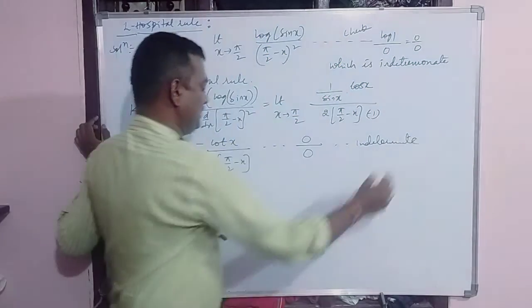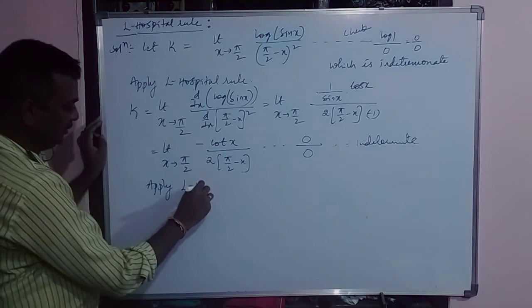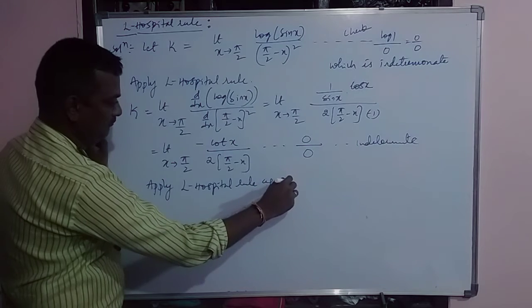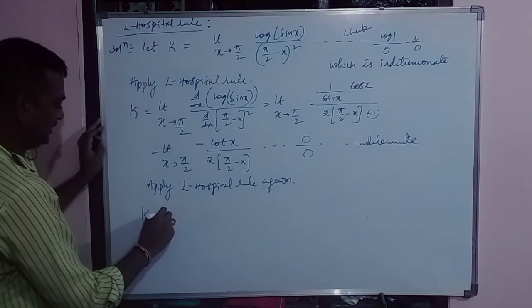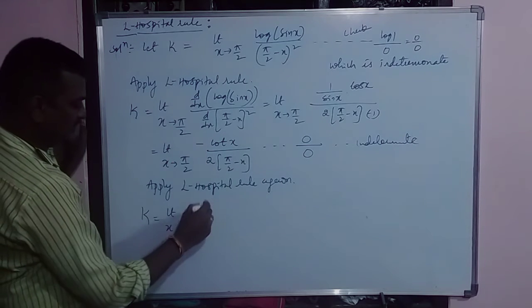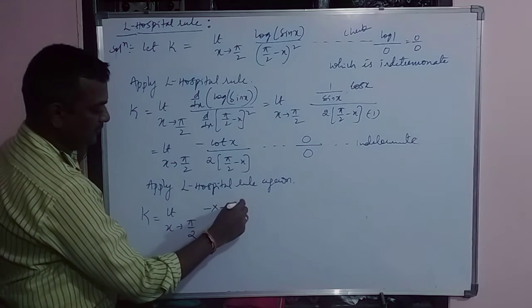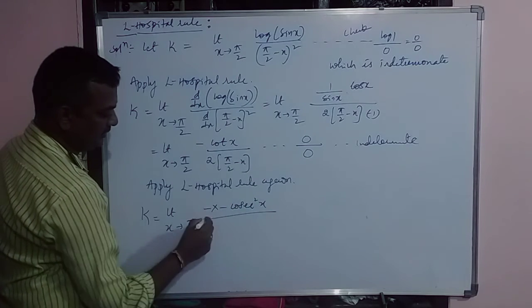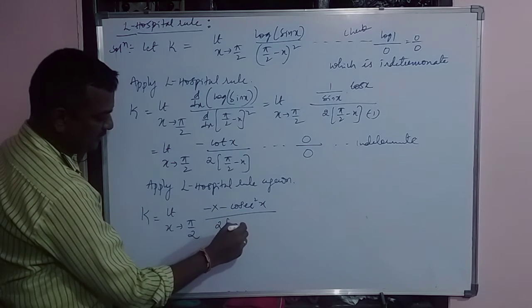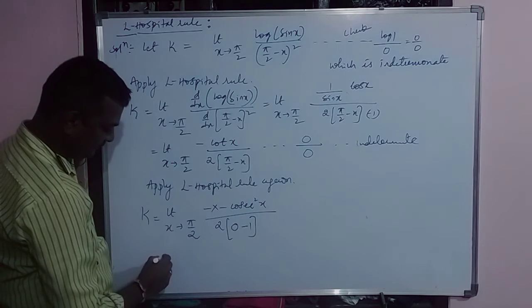So we are going to apply hospital rule again. K is equal to, this time I am not writing any derivative here. Minus, differentiation of cot x is minus cosecant square x divided by 2 into, differentiation of pi by 2 is 0, minus x is minus 1.